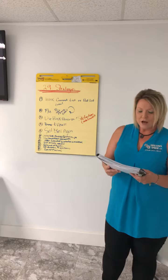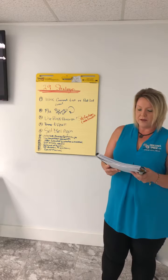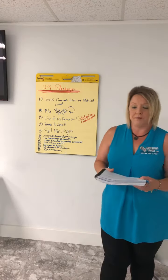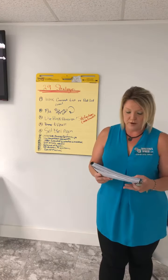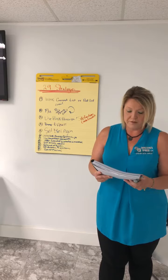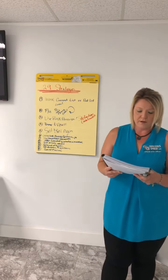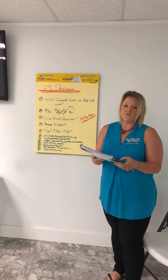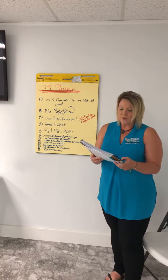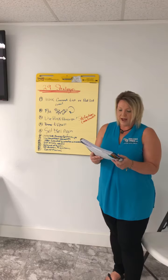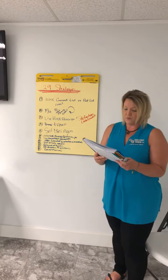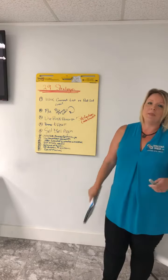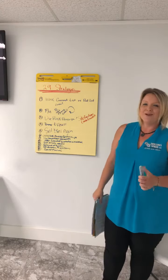Number nine: lock in sales in advance. Number ten: if you know a company is going out of business, buy their book of business or acquire their customer base. Number eleven: get your customers to give you referrals. And number twelve: get cash out of your business before going to the bank.